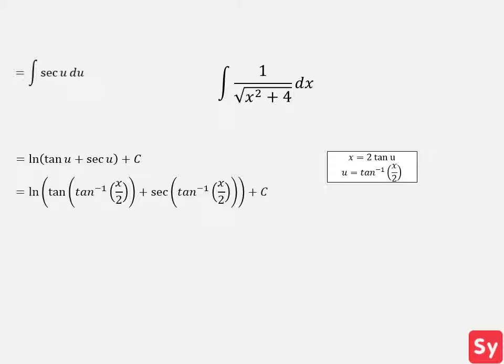We substitute this and get an ugly answer. However, we can simplify this answer to the natural log of the sum of x over 2 and the square root of x squared over 4 plus 1 plus c, which is our answer.